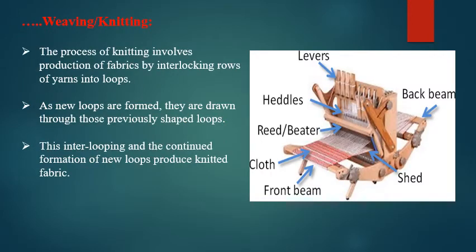The process of knitting involves production of fabrics by interlocking rows of yarns into loops. New loops are formed and drawn through previously shaped loops, so this inter-looping and continued formation of new loops produces knitted fabric. As shown in the diagram, the parallel threads are called warp and the cross thread goes in between them — called weft. The parallel threads are continuously separated into up and down positions — that is called shedding — and in between, the cross thread is passed from left to right, then beaten with a reed to set them compactly.